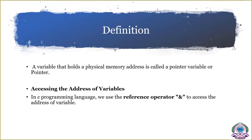We have a lot of advantages using a pointer. First, accessing the address of the variable — how to access the address of the variable. We know how to read a variable into memory using a scanf statement with the ampersand symbol. That ampersand is called the reference operator. In C programming, we use the reference operator to access the address of a variable. The ampersand is used to store the address of the particular variable.